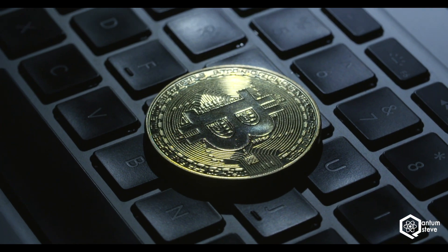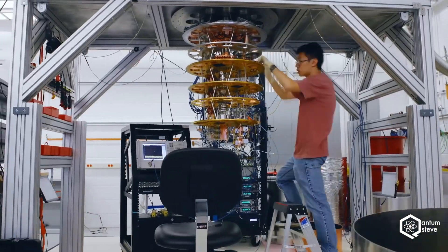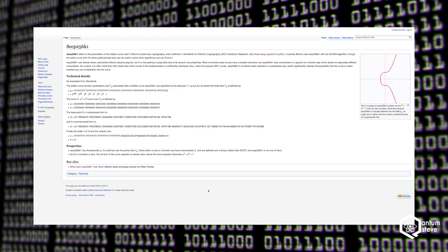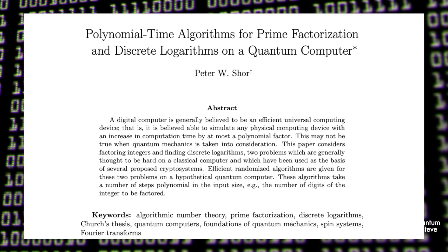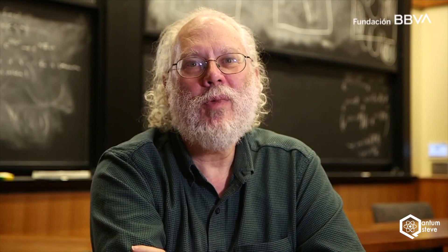Now this is where the quantum computer comes in. Bitcoin uses elliptic curve cryptography for its public private key encryption. And it turns out that this is broken by one of the most famous quantum algorithms, Shor's prime factoring algorithm.